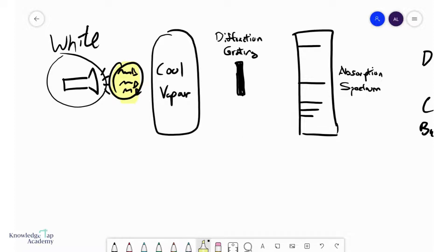What is important is that this has to be cool vapor. If we look at the energy level diagrams, if it's cool we expect most of the electrons to occupy the lower levels.